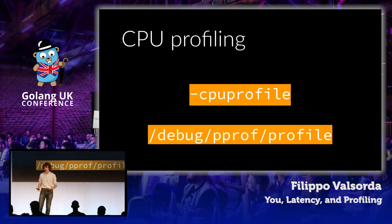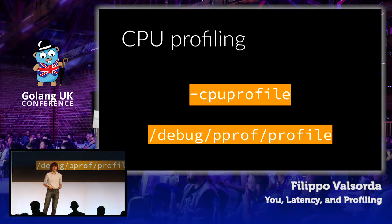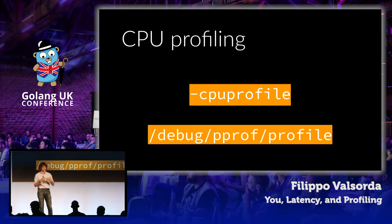Go helps us out here because the CPU profiler is very easy to use. You might have used it already. If you have tests, you just add -cpuprofile. If you have a service running, you can import net/http/pprof and hit the endpoint debug/pprof/profile, and you have a CPU profile in 30 seconds. This is very well integrated and usually what you learn about when you start learning how to optimize your programs.